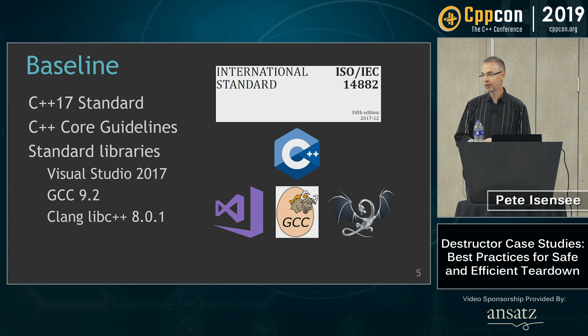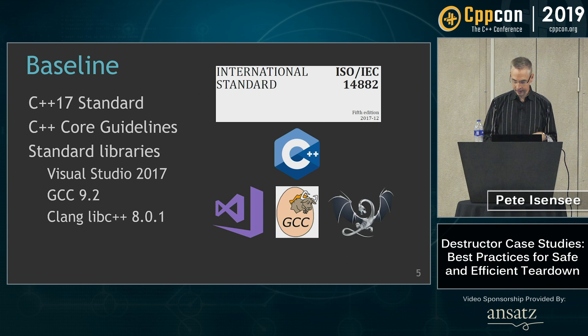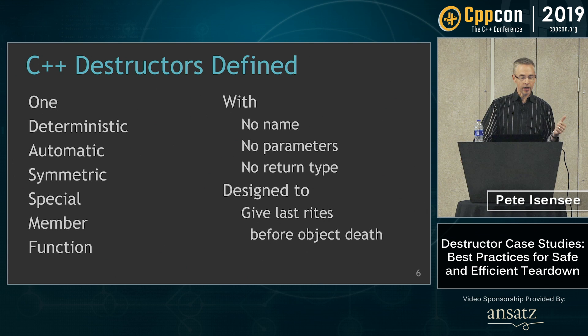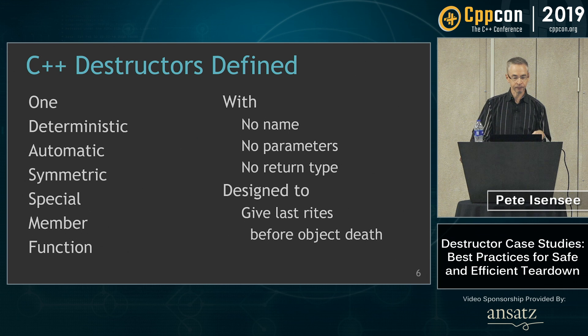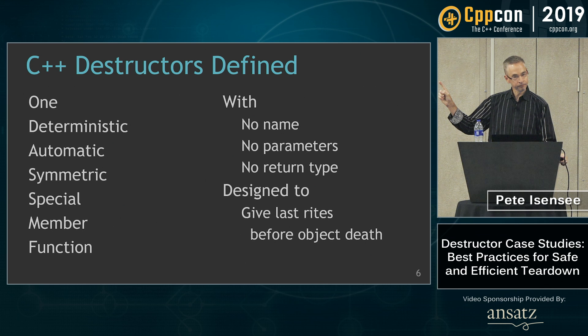The C++ standard has a three-page section on destructors but doesn't really define what they are. Here's my definition: destructors are one deterministic, automatic, symmetric special member function with no name, no parameters, no return type, designed to give last rights before object death. You can have an infinite number of constructors — you only get one destructor. Isn't that interesting?